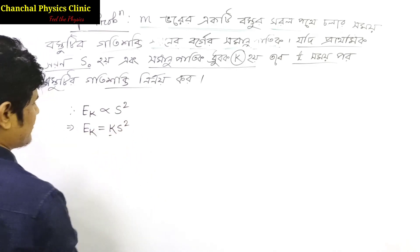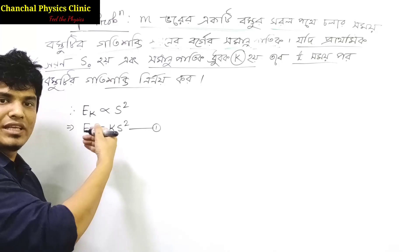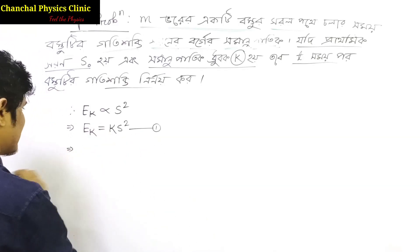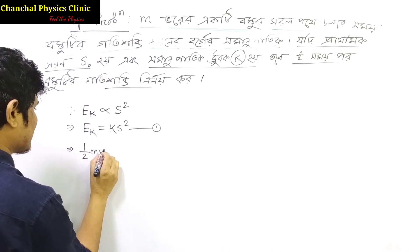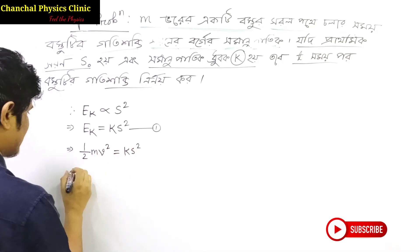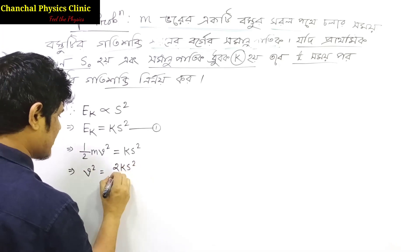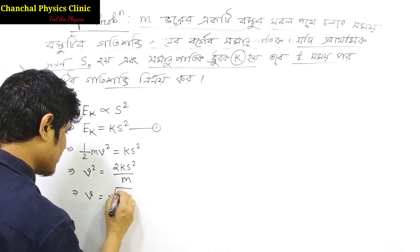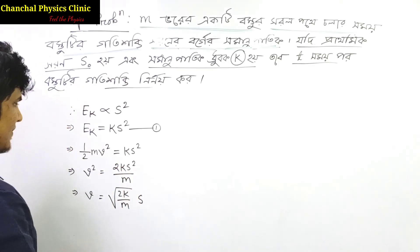તાર માણે સમાંપતેક ધ્રુભોગ બલા હચે. અર્થા, તામરા લિખ્તે પારી: v² = 2k/m · s². તાલે v સમાં, v = √(2k/m) · s.